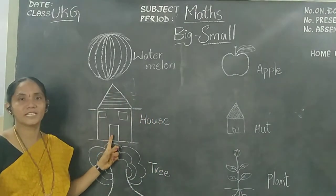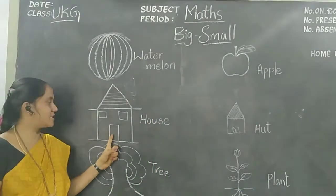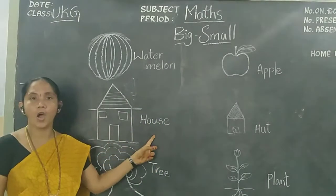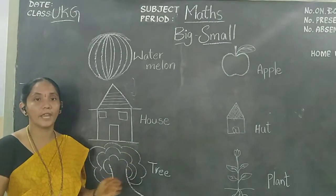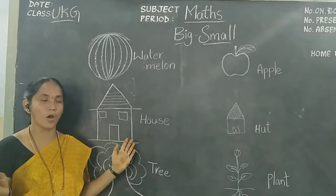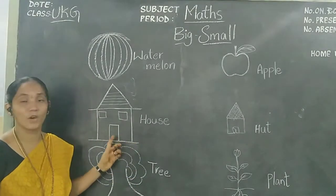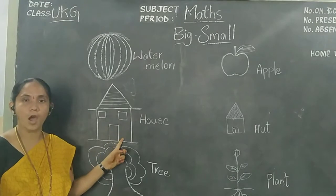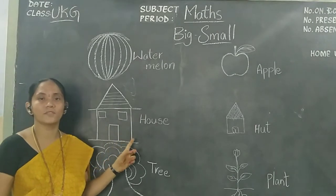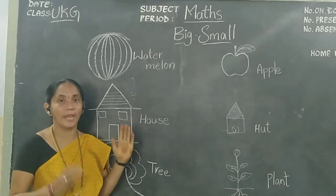What is this, children? This is a house. It looks like a very big house. What is this? This is a house. It looks very big.